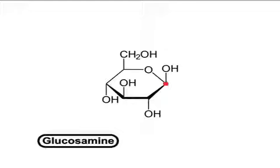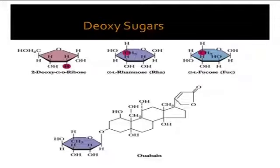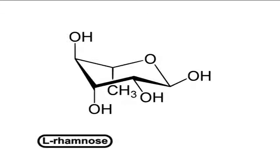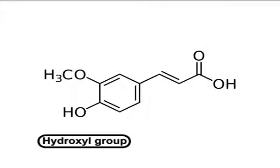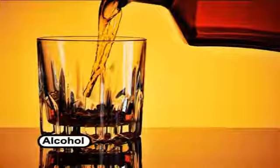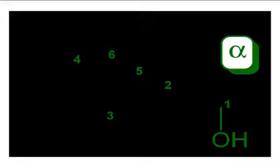Another derivative is deoxysugar, where a hydroxyl group is replaced with a hydrogen atom — for example, L-rhamnose and L-fucose. Glycosides are products formed from the replacement of a hydroxyl group with a non-sugar compound such as a phenol or alcohol — for example, salicylin and amygdalin.